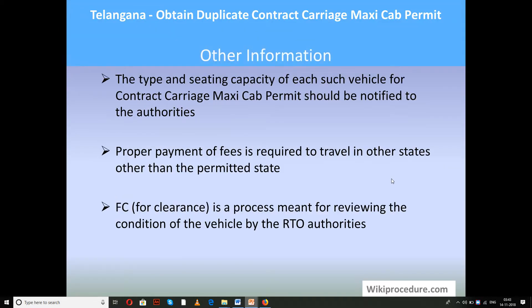Other information: the type and seating capacity of each vehicle for contract carriage maxi cab permit should be notified to the authorities. Proper payment of fees is required to travel in states other than the permitted state. FC4 clearance is a process meant for reviewing the condition of the vehicle by the authorities. Thank you once again for visiting WikiProcedure.com to know how to obtain a duplicate contract carriage maxi cab permit in Telangana.